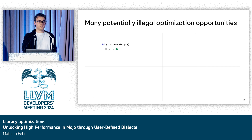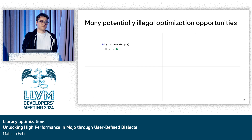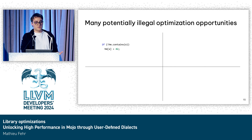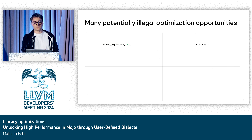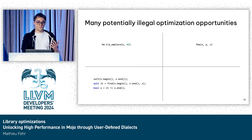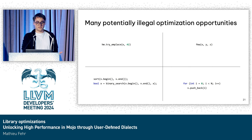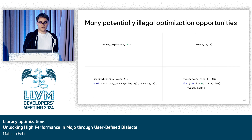There are a lot of other examples we can see even in the standard library in C++ where we might want to do some optimization that either requires a lot of inlining or that requires optimizations that are actually illegal at the LLVM level. For instance: if we check that an element is in a hash map and then add it if it's not there, this is just a try_emplace. If we have a multiplication and an add, it could be replaced by a fused multiply-add. If we have a sort and then a search for an element, we can just do a binary search instead. And if we have a for loop with a pushback, we can add a reserve before, so we have the exact capacity at the beginning and avoid multiple reallocations.